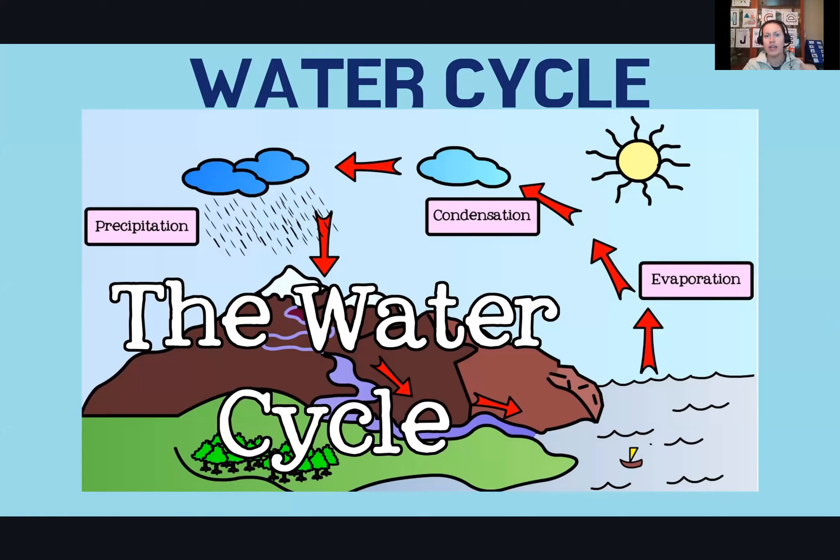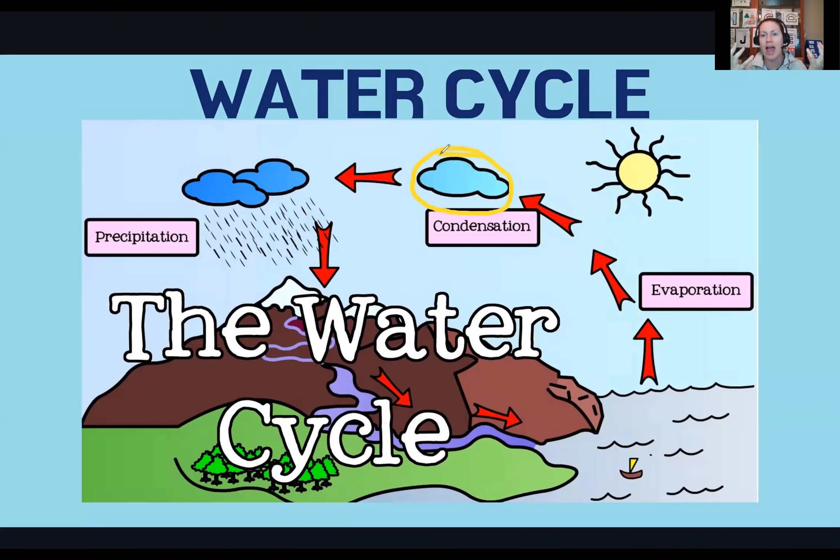But eventually it cools down and starts to form a cloud. This is called condensation. Once you have enough condensation, the water and the moisture will start to gather in that cloud and it's going to get really heavy. That's going to lead to precipitation, which is what I'm getting today. The water in the cloud gets too heavy after a certain point and it falls back down to earth.